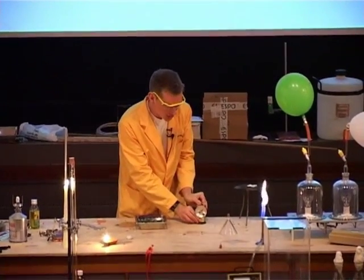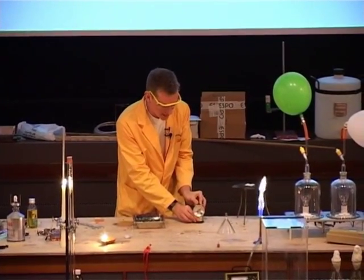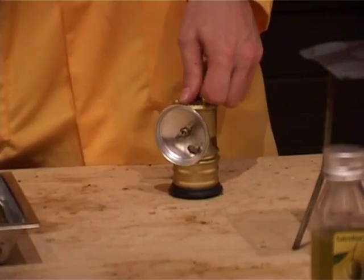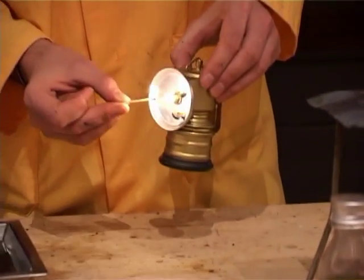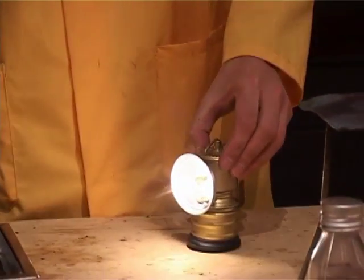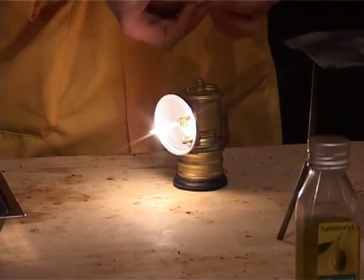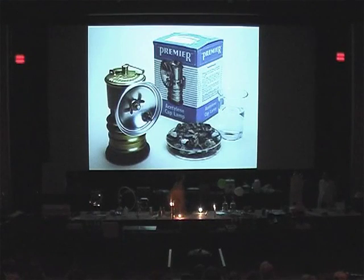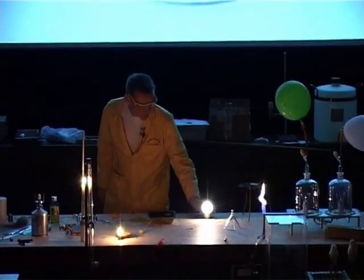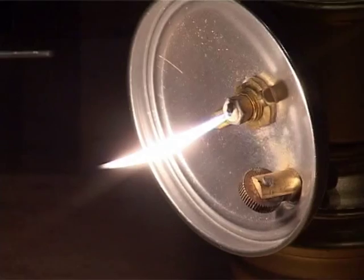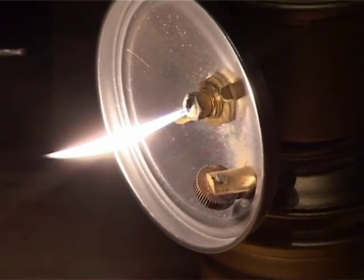The reaction to generate the gas involves water dropping onto something called calcium carbide. So in the slide at the back here, we see the lamp, and this here is the calcium carbide. Adding water to this gives the gas ethine.